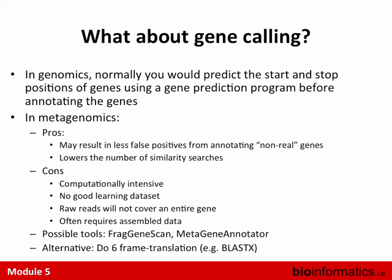Gene callers designed specifically for metagenomics allow for missing start or stop codons, removing that restriction. Tools include MetaGeneAnnotator and FragGeneScan. The alternative is to skip gene calling entirely and just do six-frame translation using BLASTx or Diamond, which is my preferred approach.